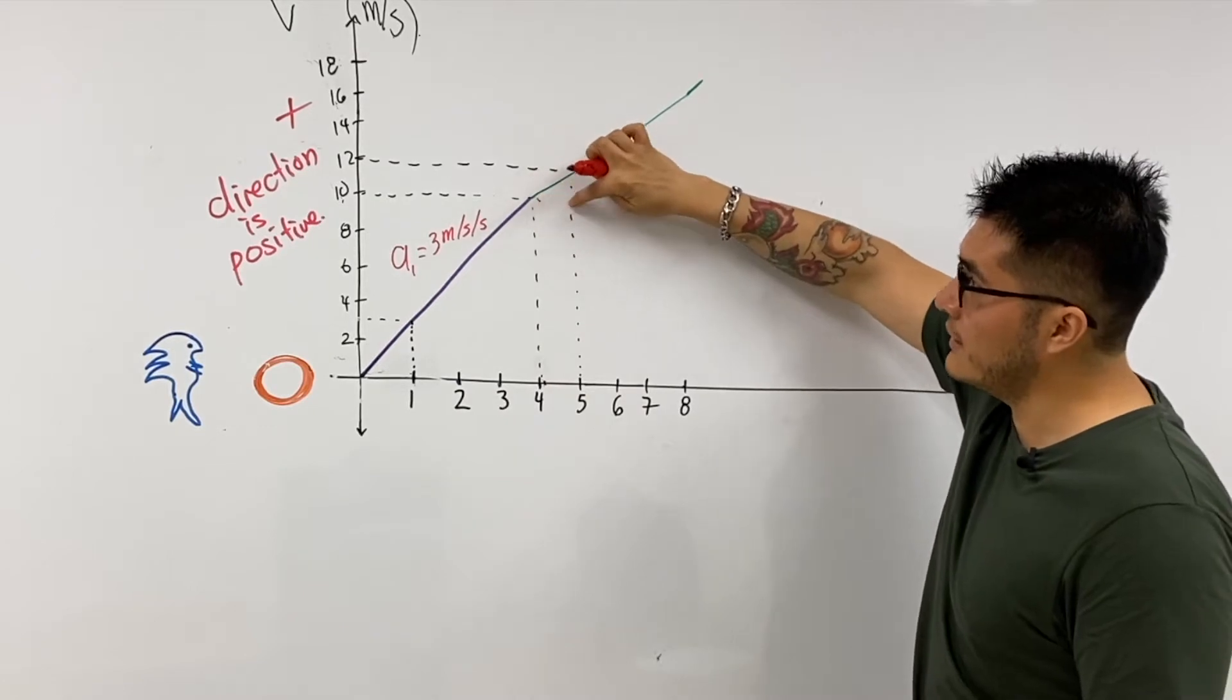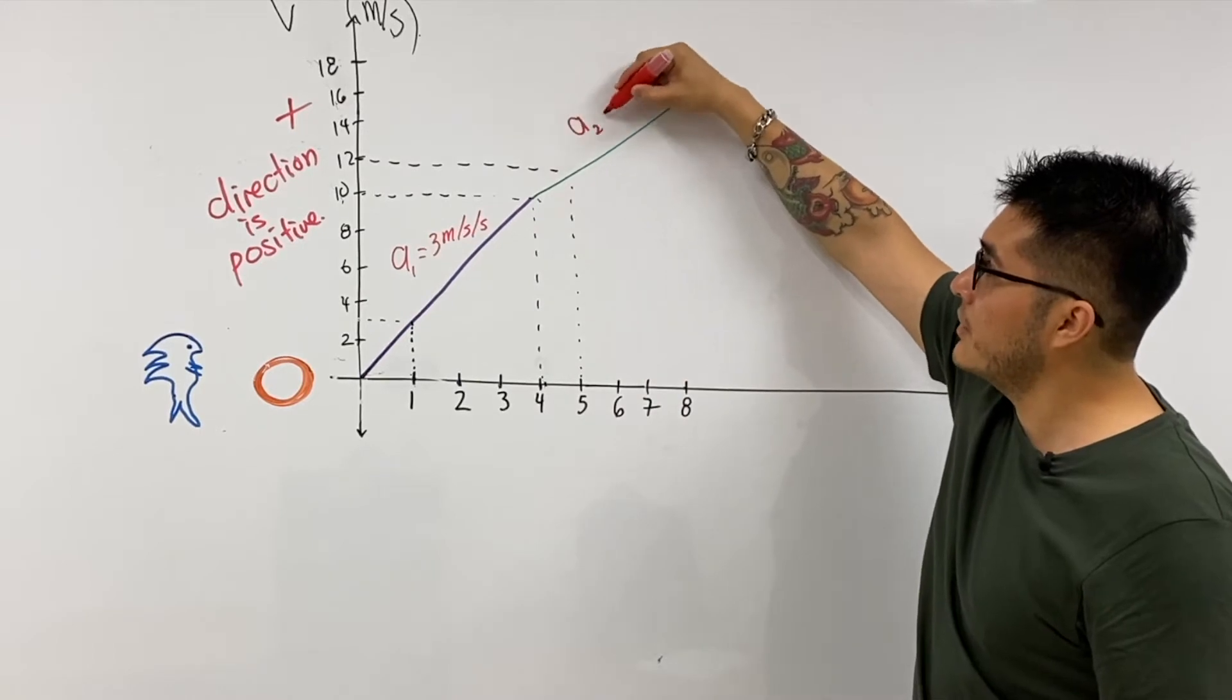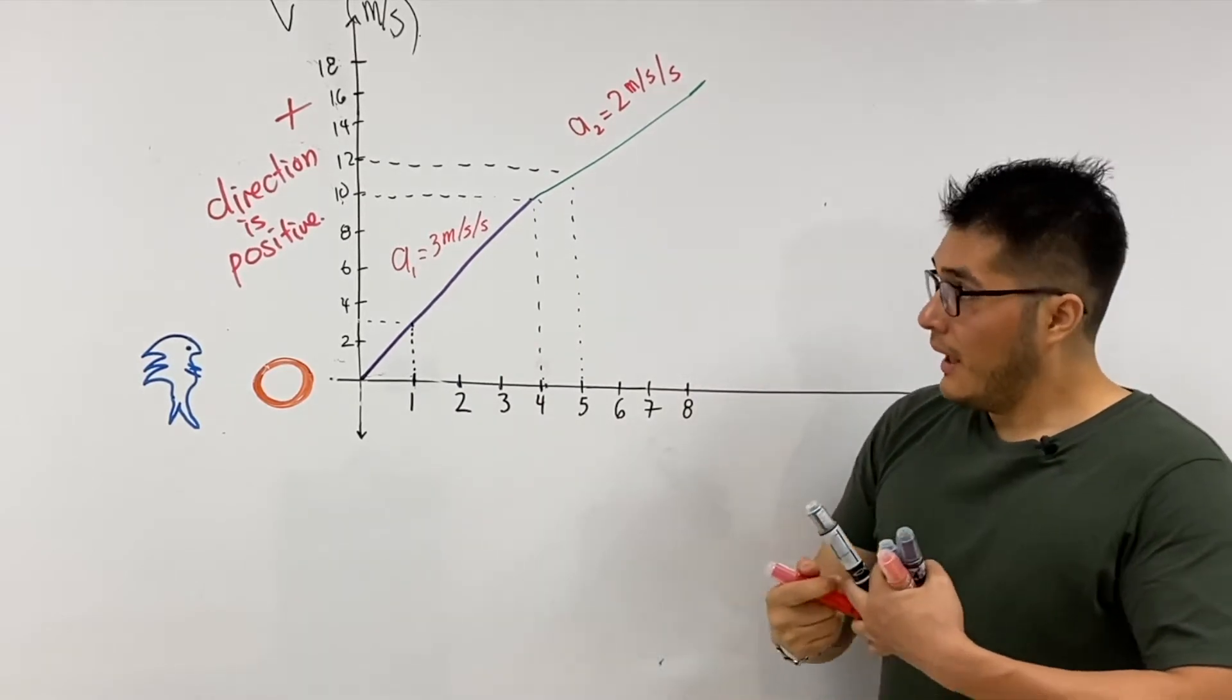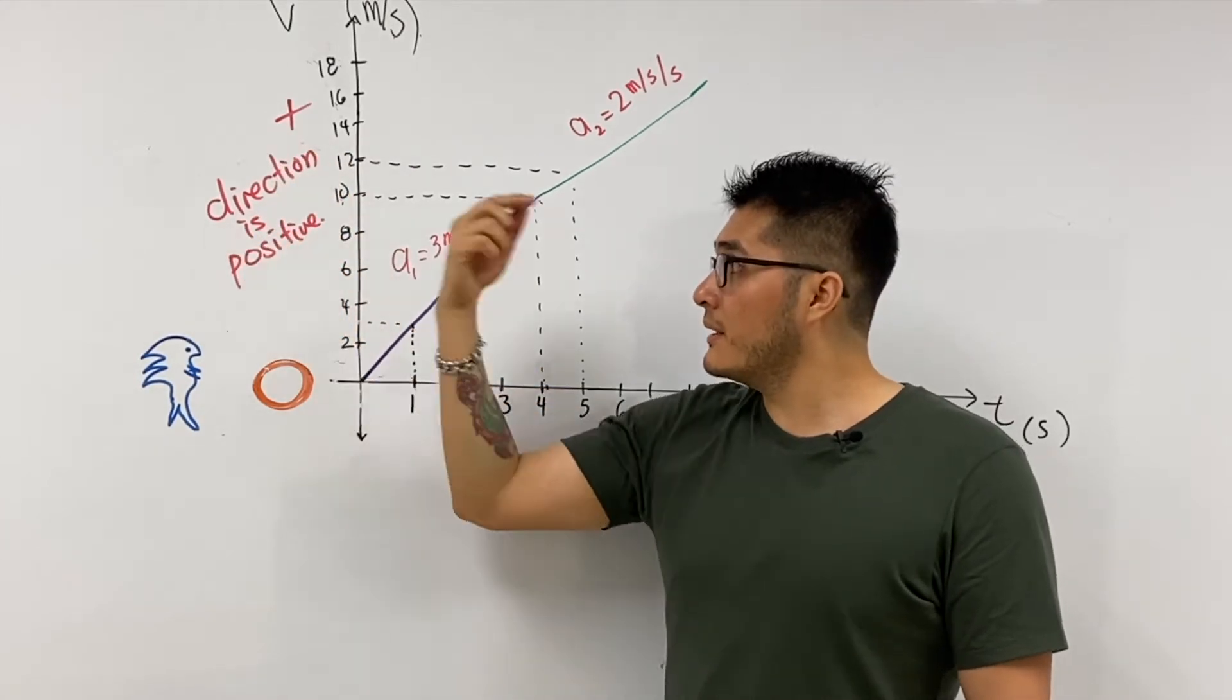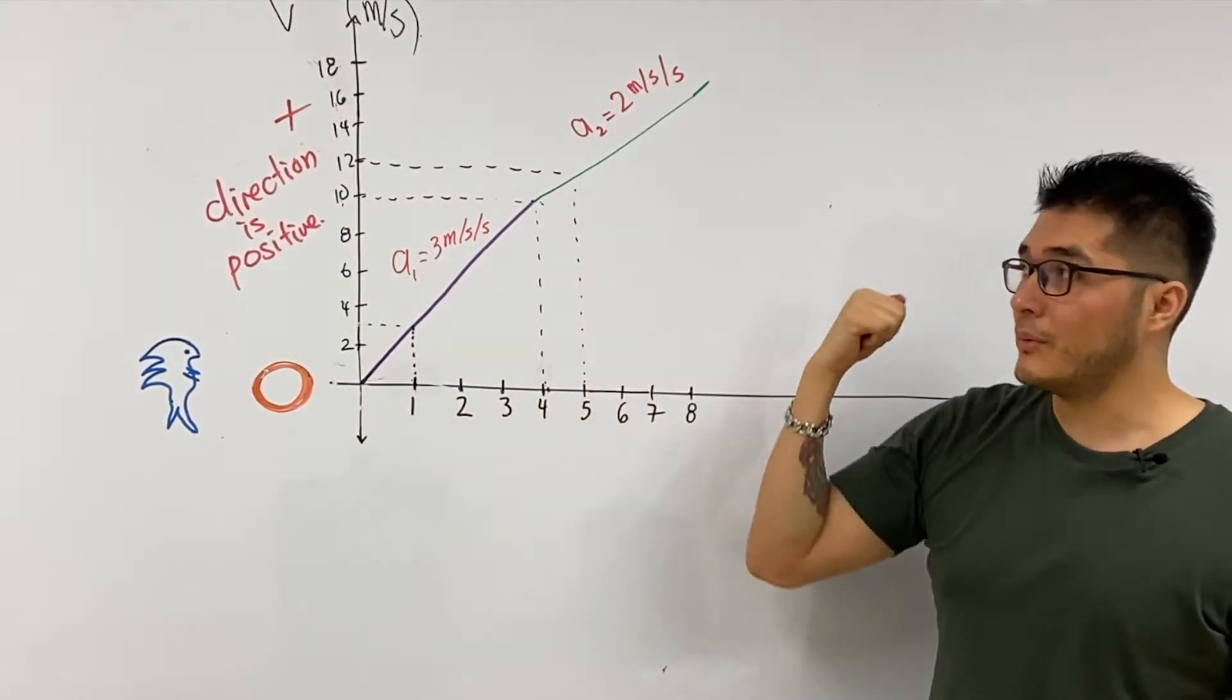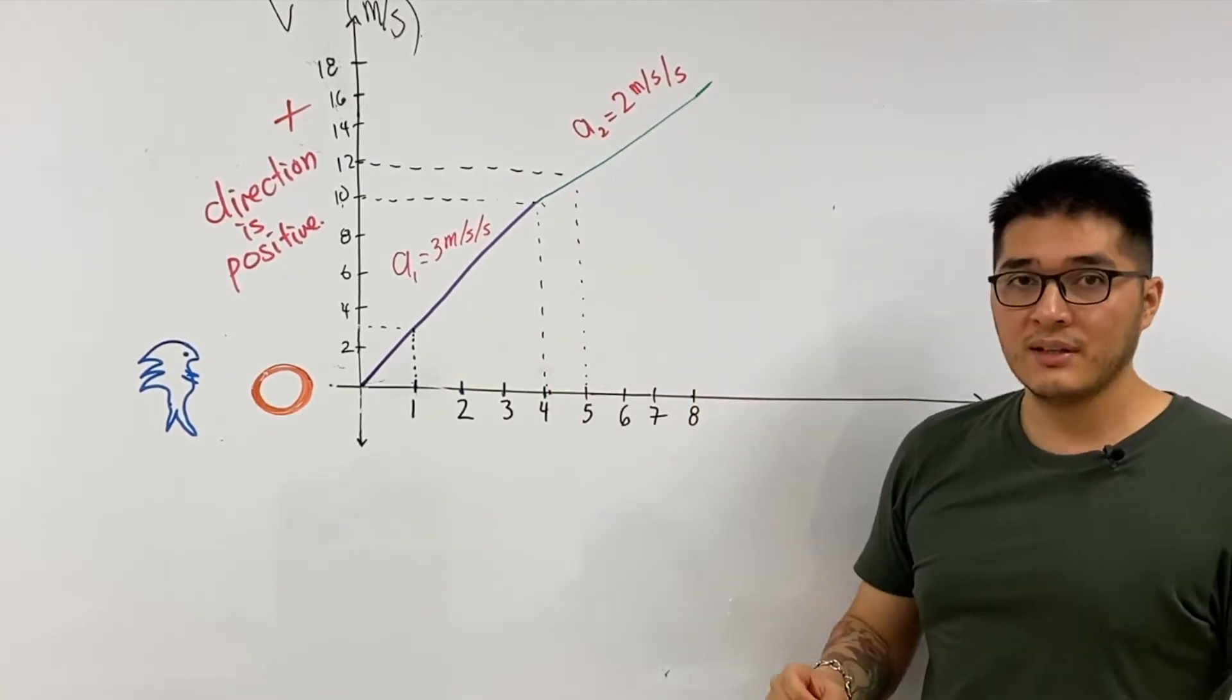During the green line, if we look at another one second time interval, we notice that it's changed by two meters per second. So the acceleration from the second portion is going to be two meters per second per second. Whenever the velocity is positive, this is going to indicate the direction of motion. Sonic continues to speed up away from the origin towards the positive values.